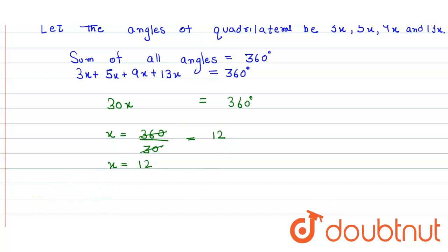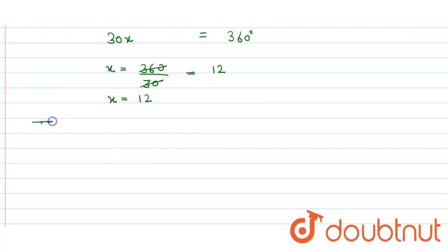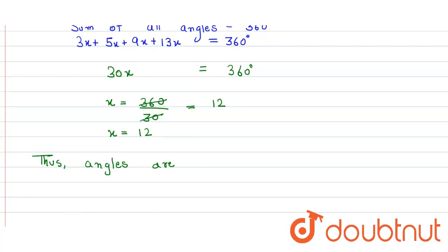Now all the angles are, thus the angles are: First angle, it is 3x, so that will be 3 × 12 = 36°.